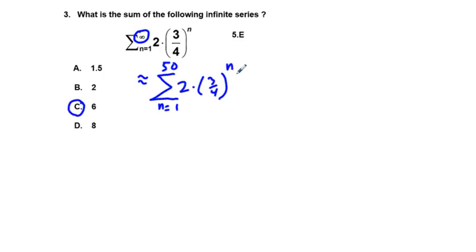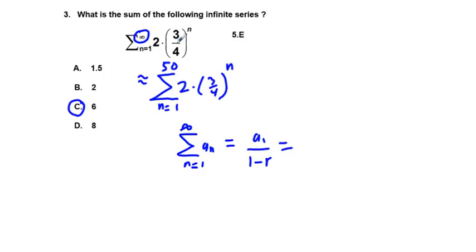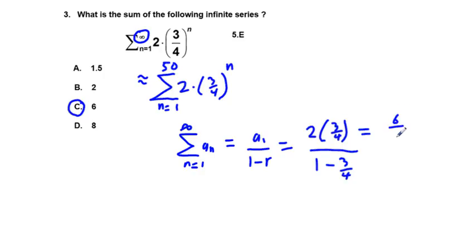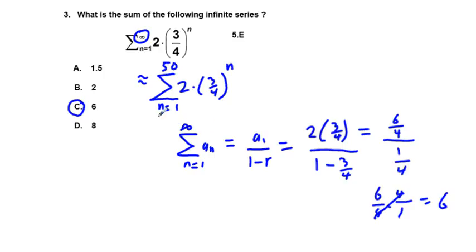There's also a formula: the sum from n equals one to infinity of a sub n equals a sub one over one minus r. In this case our first term is two times three-fourths, and r is three-fourths. That gives six-fourths over one-fourth. Multiplying by the reciprocal gives six. So both approaches confirm the answer is six.